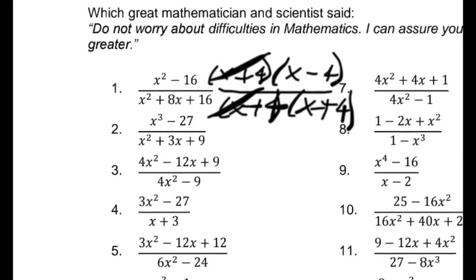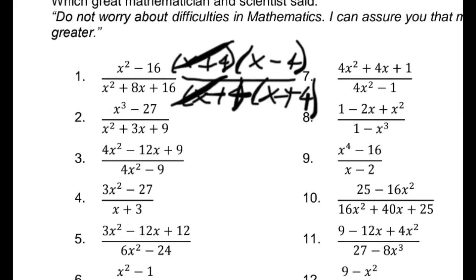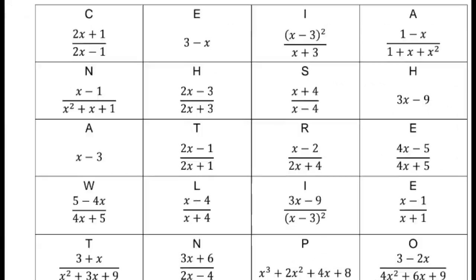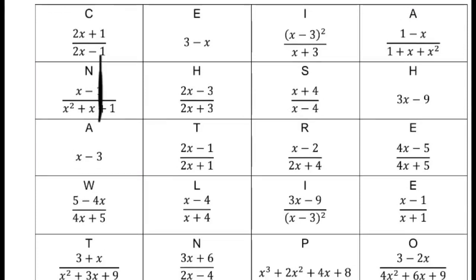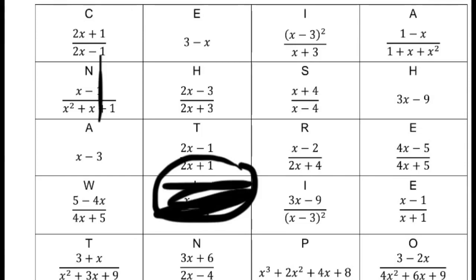You're going to select your answer on the box. x minus 4 over x plus 4 — that will be L. Meaning you're going to shade this box, L. So that's Activity 1.